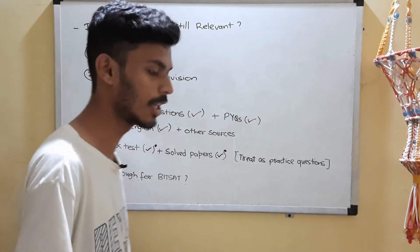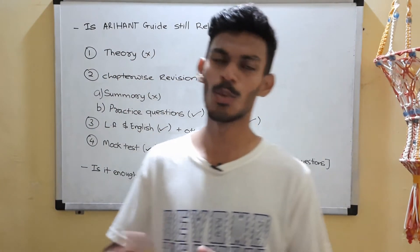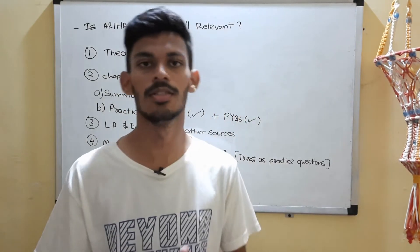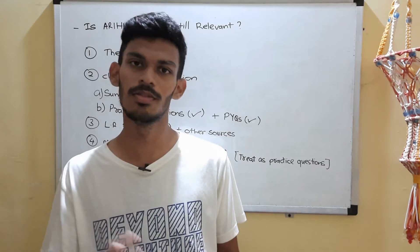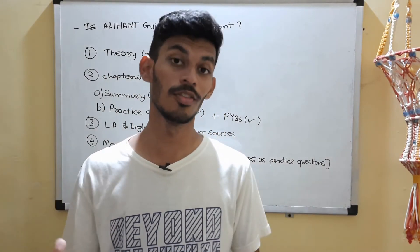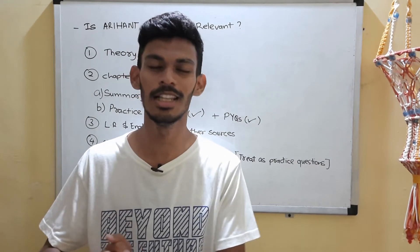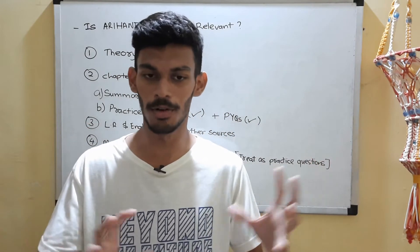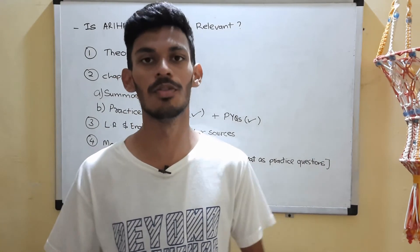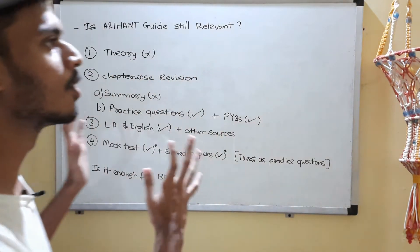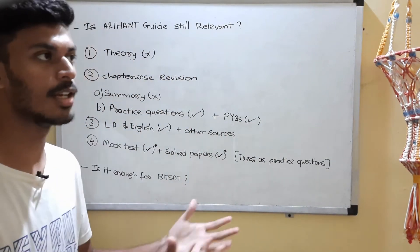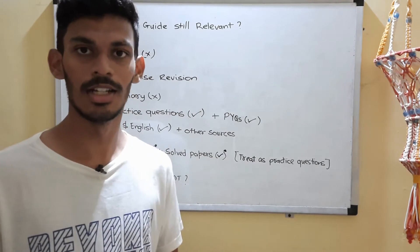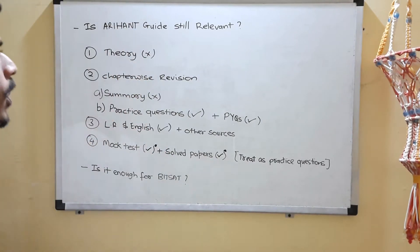First, let's discuss theory. The format of the BITSAT Arihant Guide is quite simple — chapter-wise discussions, with a summary of each chapter, then practice questions, and finally previous year questions. The summary leaves out a lot of things; it just mentions some formulae and random stuff. You cannot really rely on this book for theory. For theory, you'll have to go to reference books that I mentioned in the six-month strategy video.